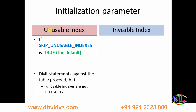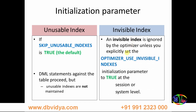The initialization parameter SKIP_UNUSABLE_INDEXES is by default set to true. This means DML statements on a table proceed even when unusable indexes are not maintained — you can perform DML operations without any error. This feature works when SKIP_UNUSABLE_INDEXES is true. For invisible indexes, you have to explicitly set OPTIMIZER_USE_INVISIBLE_INDEXES to true, either at the session level or system level, for that feature to be enabled.